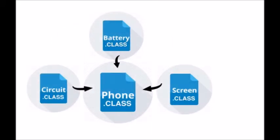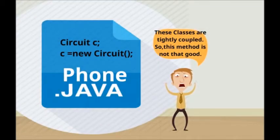Now let's look at the same scenario in the context of Java. In Java, if you want to create a phone object, you have to have a phone class. And the components that are needed to create the phone are also classes and they become the attributes of the phone class. So if we want the circuit inside the mobile phone, what we typically do is we create an object of circuit inside the phone class by using the new keyword. But now these two classes are tightly coupled, and this method is not that good.